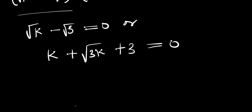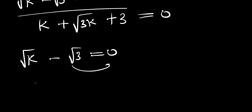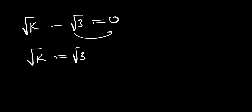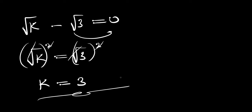For the first equation, √k minus √3 equals 0, we get √k equals √3. Squaring both sides eliminates the square roots, giving us k equals 3. So k equals 3 is one real solution.